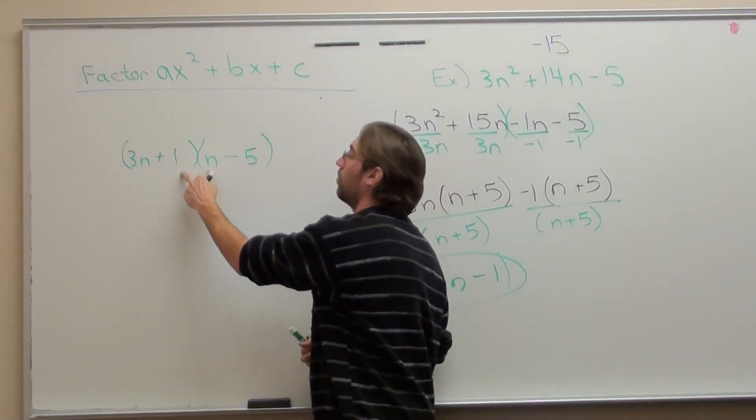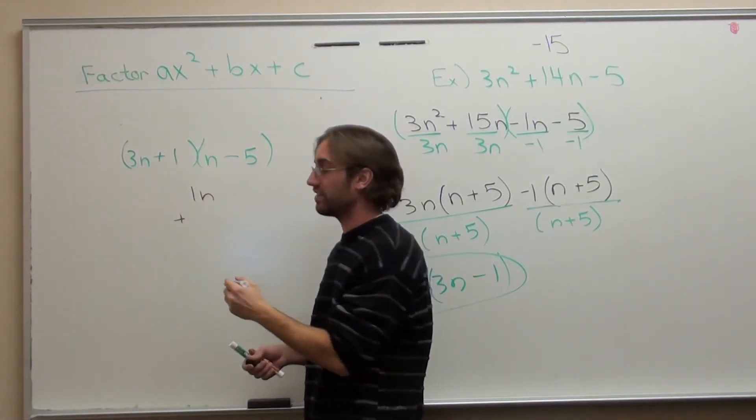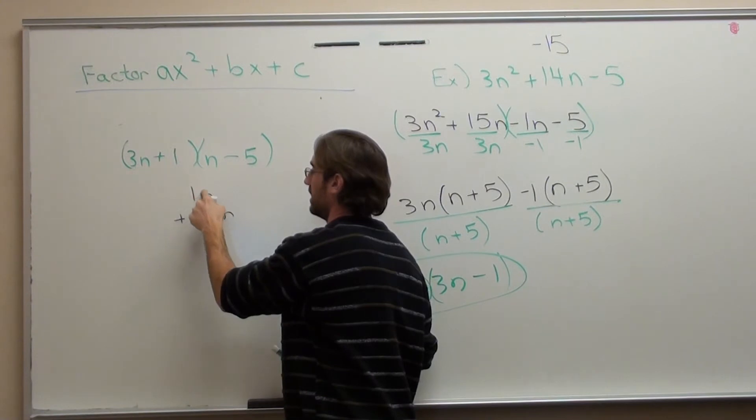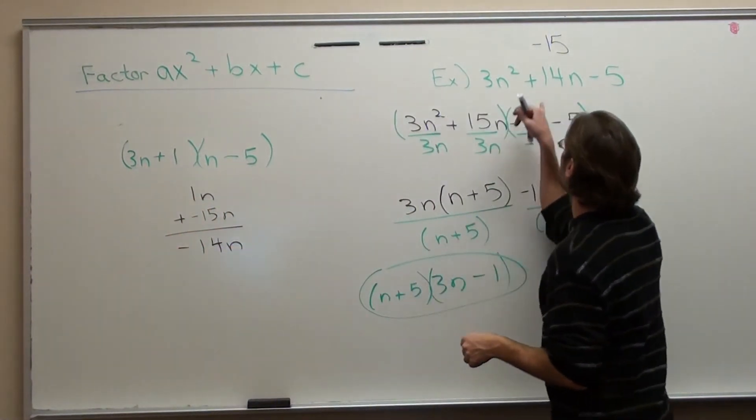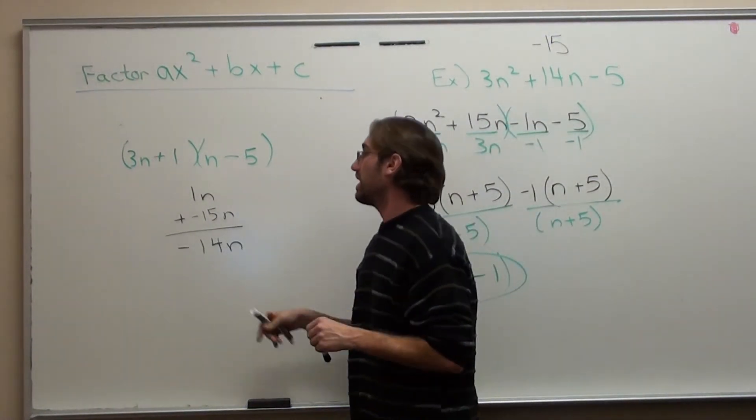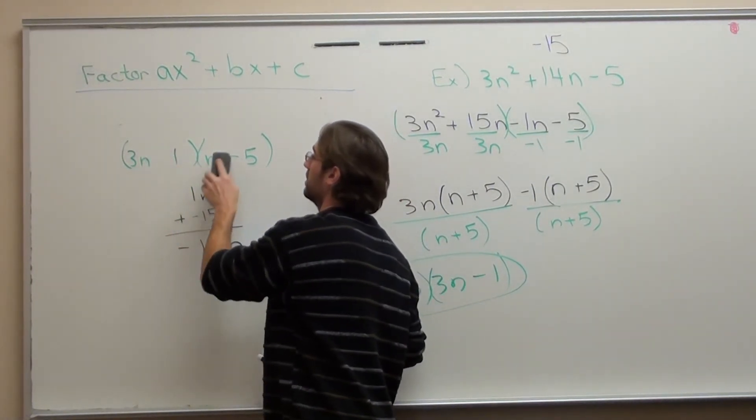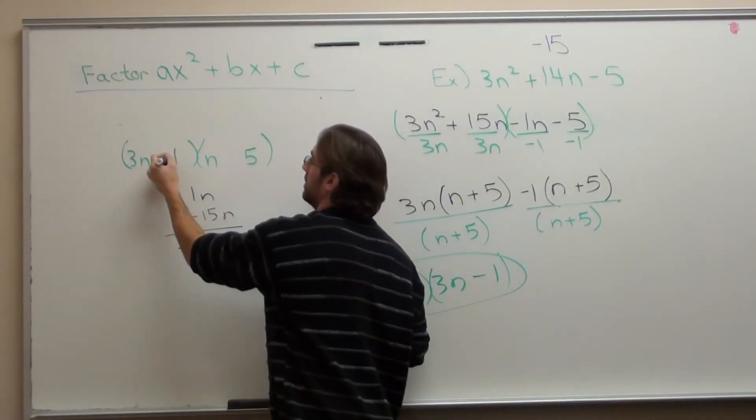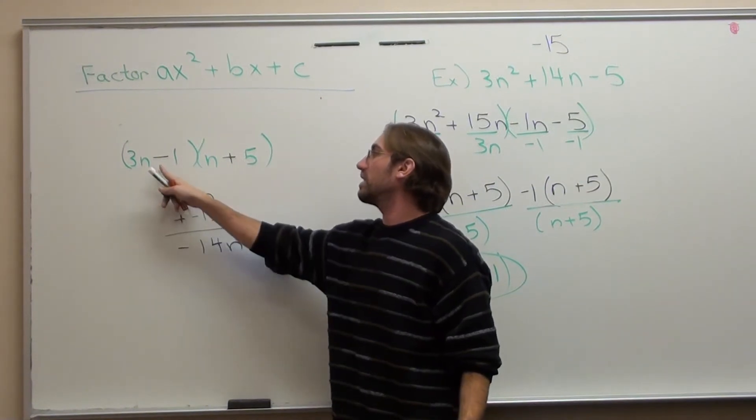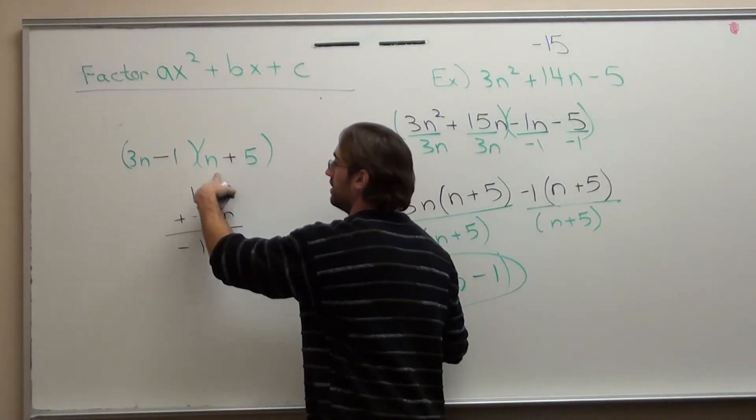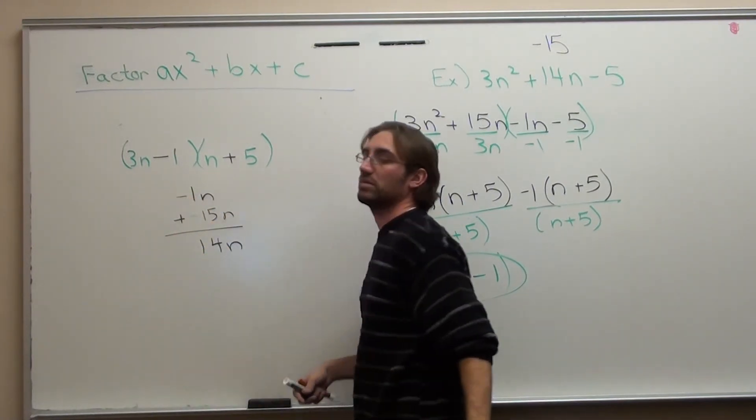Check it. 1 times n is 1n. 3n times -5 is -15n. That's -14n. I wanted positive 14n. Before you become all flustered, if you got the same number except the opposite sign, all you do is change the signs. This was positive negative and it gave me -14. Negative positive will give me -1n plus 15n which is 14n.